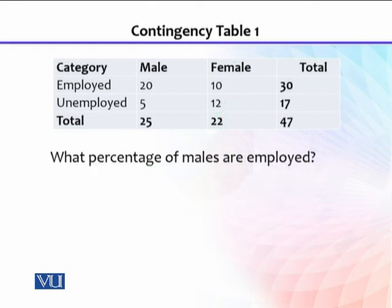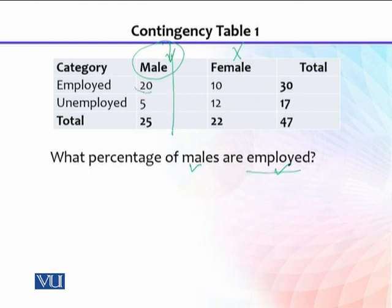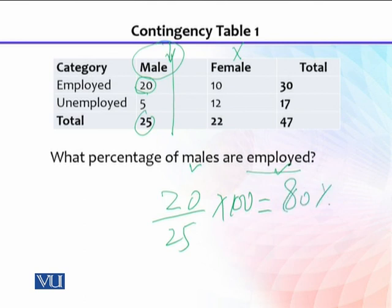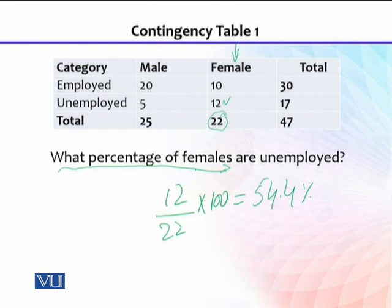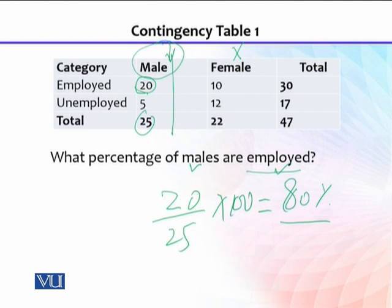The next question is: what percentage of males are employed? You first look at the males column only, then look at the employed count. The total males are 25, out of which 20 are employed. So 20 out of 25 multiplied by 100 equals 80 percent — 80 percent of males are employed, which means 20 percent of males are unemployed. Earlier we saw that 54 percent of females are unemployed, whereas here only 20 percent of males are unemployed. This means the unemployment ratio is higher among females compared to males — this is a kind of association as well.